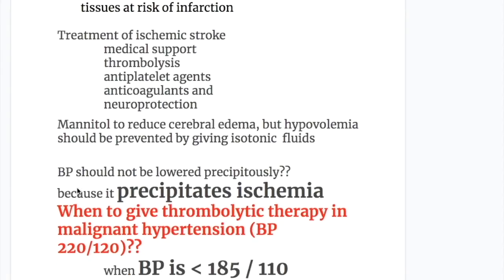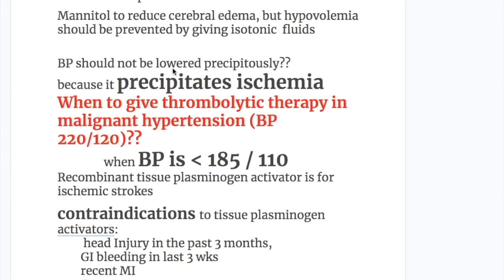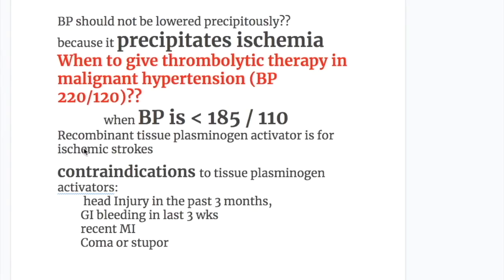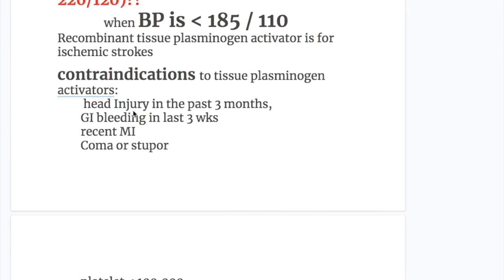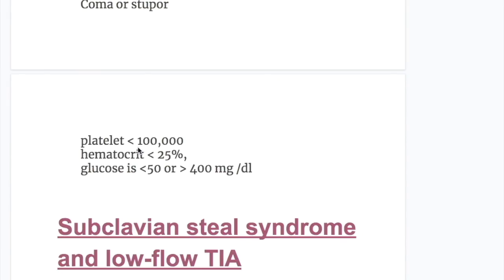Treatment after ischemic stroke generally includes medical support, thrombolysis, antiplatelet agents, anticoagulants, and neuroprotection. Mannitol is used to reduce cerebral edema, but hypovolemia should be prevented by giving isotonic fluid. Blood pressure should not be lowered precipitously, as this precipitates ischemia. Recombinant tissue plasminogen activator is used for ischemic stroke. Contraindications include head injury in the past three months, GI bleeding in the past three weeks, recent MI, coma or stupor, platelet count less than 100,000, hematocrit less than 25%, or glucose less than 50 or more than 400 mg per 100 ml.